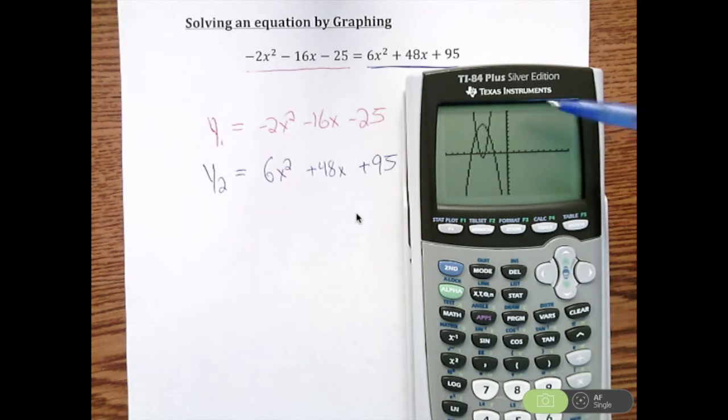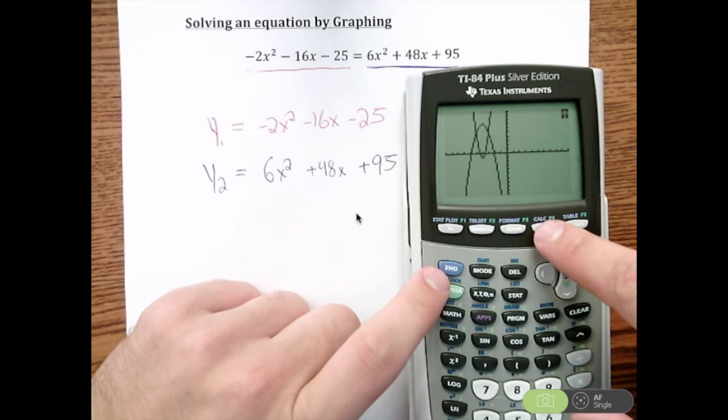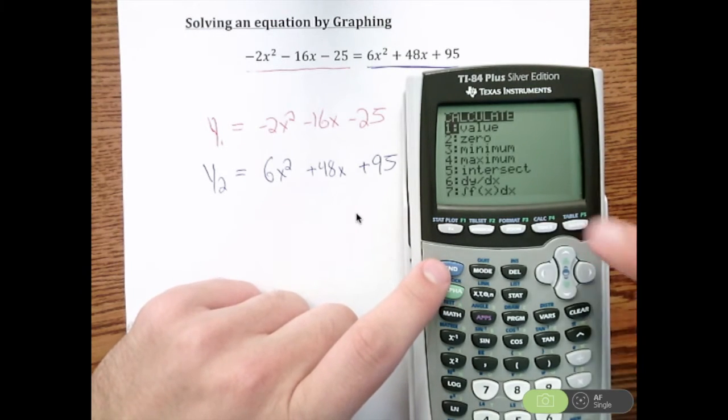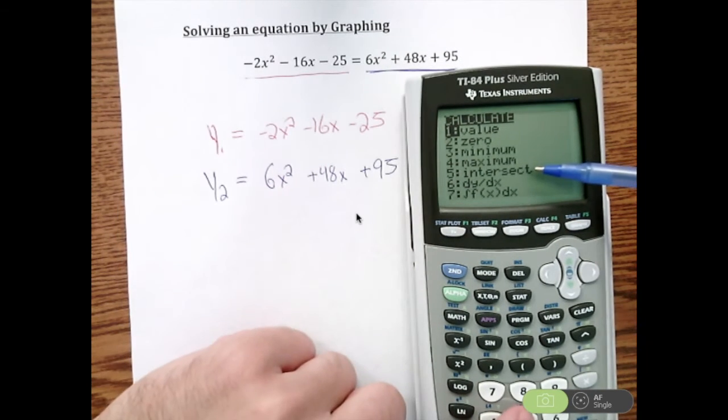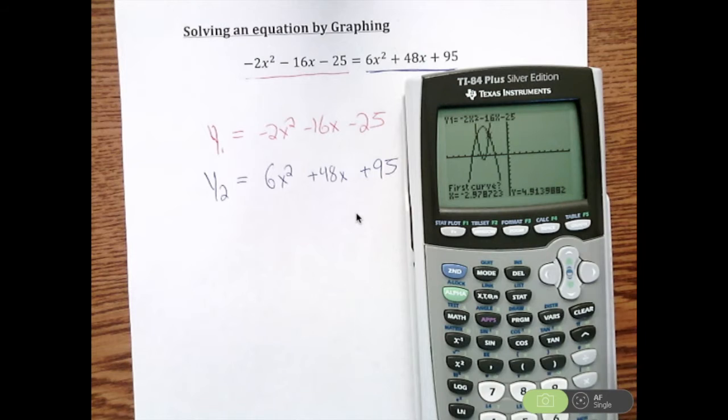So to do that, I've talked about this in previous videos, we're going to go to 2nd Calc. These two buttons. And we're going to go to Intersect. And that will allow our calculator to determine where these two intersections are taking place.